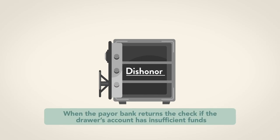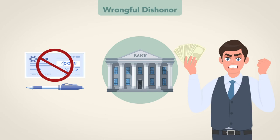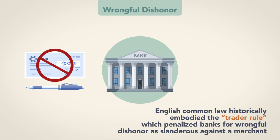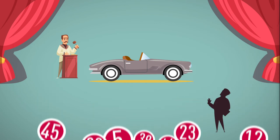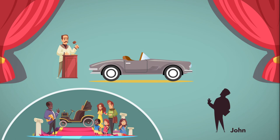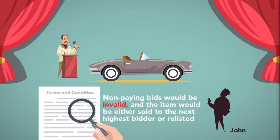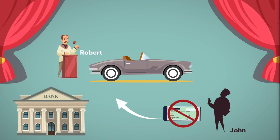Dishonor. If the drawer's account has insufficient funds, then the payer bank may return the check, which is called dishonor. If the payer bank dishonors a check when it should have been paid, the bank has committed a wrongful dishonor, and liability can be significant. English common law historically embodied the 'trader rule,' which penalized banks for wrongful dishonor as slanderous against the merchant, but today the law requires a showing of actual damages. Assume John wins an auction for a collectible car that he intended to restore and resell to Wellington's Car Museum at a substantial profit. The terms of the auction stated that non-paying bids would be invalid and the item would be either sold to the next highest bidder or relisted. John pays Robert the seller with a check, which John's bank erroneously dishonors.